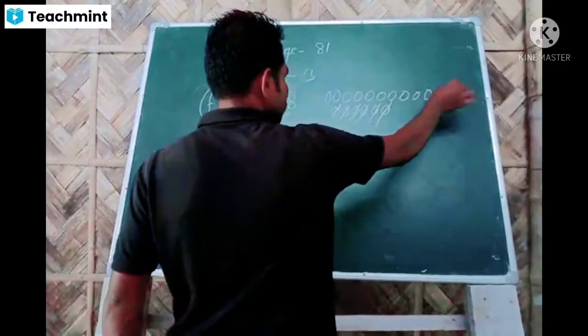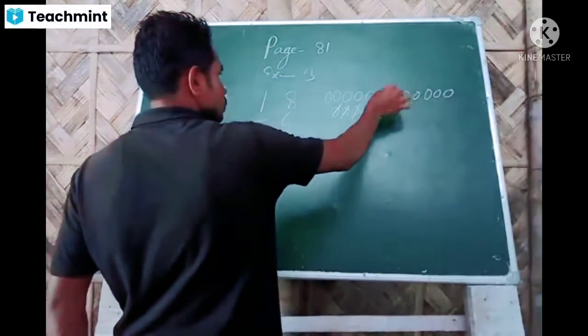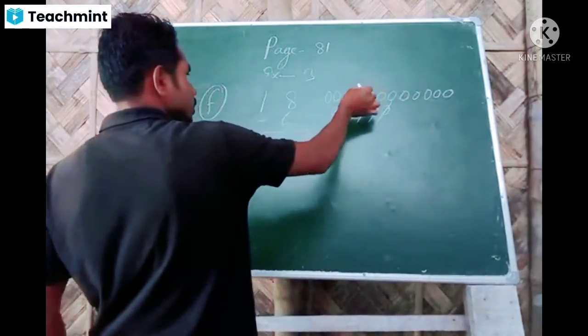You have to count like this. 1, 2, 3, 4, 5, 6, 7, 8, 9, 10.